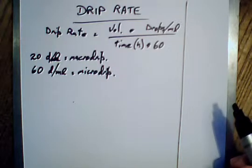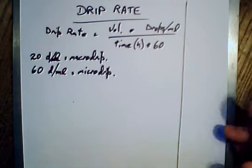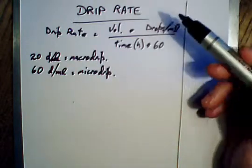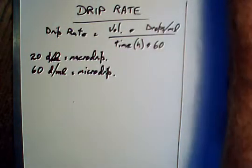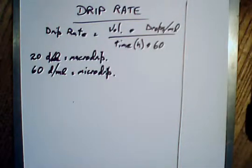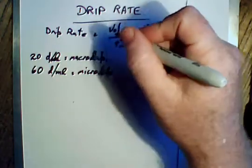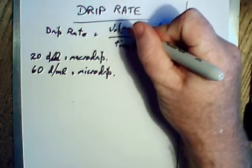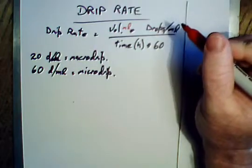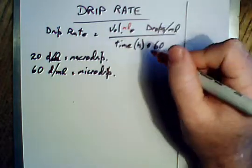Now the formula for this: the drip rate is going to be the volume. Keep the volume in milliliters because that's what the unit is going to be. The time here is in hours, and then you've got drops per milliliter.